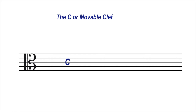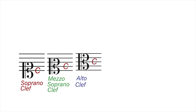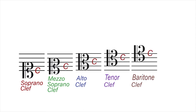On whatever line the C clef is placed, that line becomes middle C. We have the soprano clef, the mezzo-soprano clef, the alto clef, the tenor clef, and the baritone clef. Treble singers are usually classified in two groups: the sopranos, who have the higher voices, and the mezzo-sopranos, whose pitches are slightly lower than the sopranos. So both soprano and mezzo-soprano are treble singers.